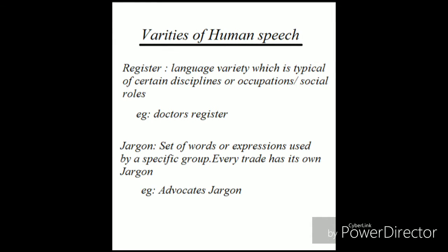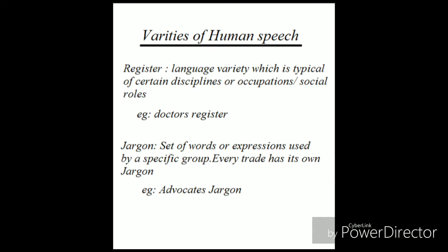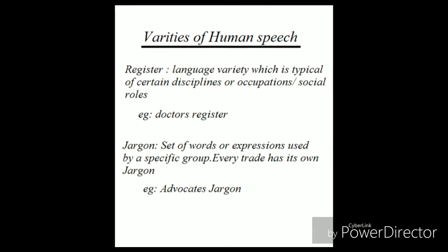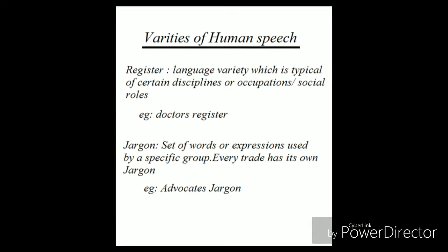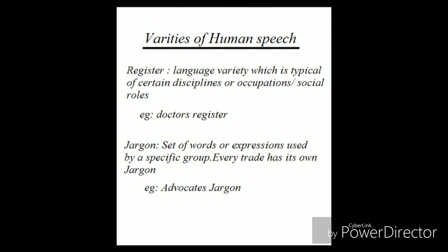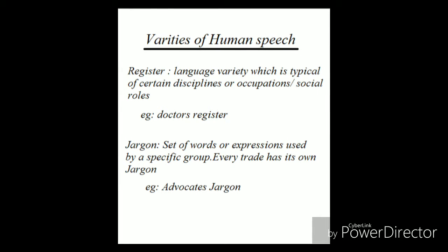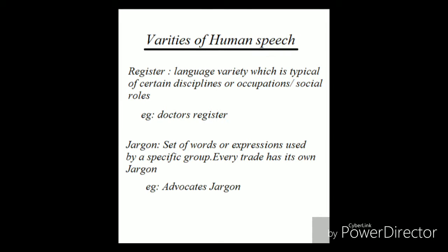The first variety is register. Language that is typical of a certain discipline, occupation, or social role is called register. For example, I am a teacher — while speaking with fellow teachers I use terms only understandable by teachers, such as 'entry activity,' 'prerequisites,' or 'rapport.' Similarly, a doctor uses terms with colleagues that are not used when speaking with his wife, children, or friends. A set of words in a language understandable only to people of a specific profession is called register.